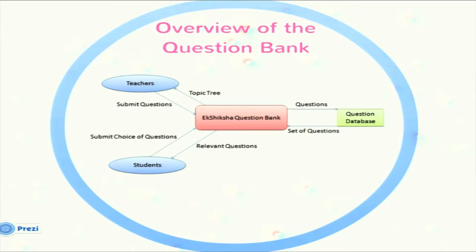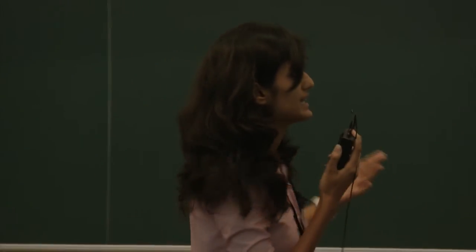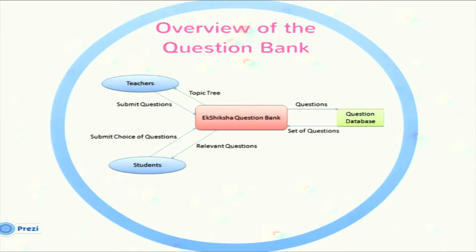Here is a quick overview of the question bank. We have two interfaces: one for teachers and one for students. Teachers retrieve the topic tree from the Akshik Shiksha question bank, select a particular topic, and submit their questions. This expands the database since teachers from all over the world can submit questions. Students submit their choice of questions — the number and difficulty level — and in return they receive a set of relevant questions from the question database.